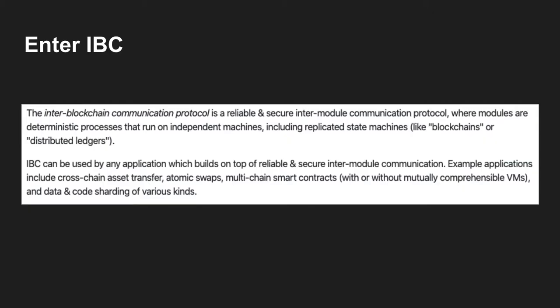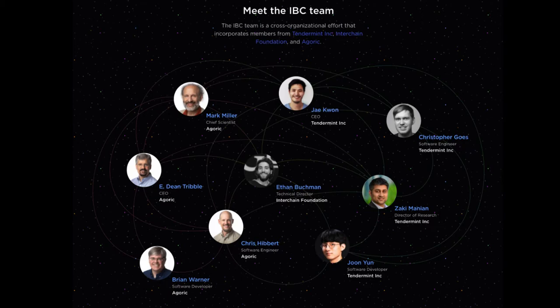So enter IBC. IBC, or the Inter-Blockchain Communication Protocol, is trying to become a standard for inter-blockchain communication. It's a secure and reliable inter-module communication protocol, which is deterministic and runs on independent machines, including replicated state machines like blockchains or distributed ledgers. IBC can be used by any application which builds on top of it. Some examples include cross-chain asset transfer, atomic swaps, multi-chain smart contracts, and data and code sharding of various kinds. IBC is being built right now by three independent teams, including the Inter-chain Foundation, Tendermint, and Agoric. For context, the Inter-chain Foundation is similar to the Ethereum Foundation for Cosmos.